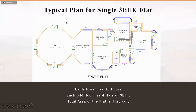This is the typical plan for a single 3BHK flat. The total area of this flat is 1,128 square feet. There are two main bedrooms with attached toilets and balconies, a common bedroom, another bedroom, and a common toilet. There is also a dining hall and a drawing room.